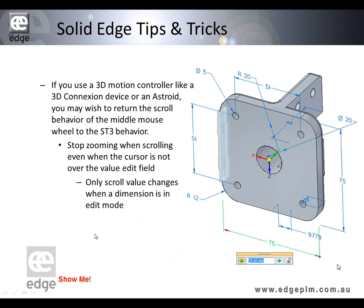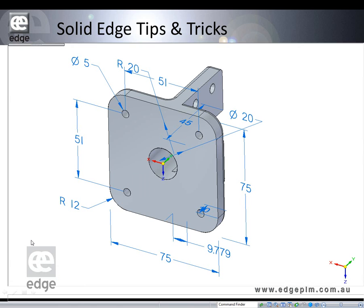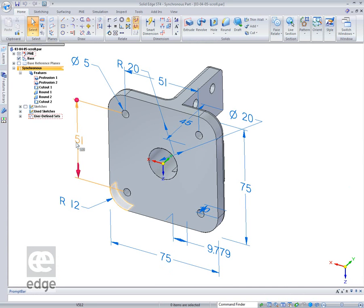Many of you who have been using Solid Edge for some time will be aware that you can use the middle mouse button or scroll wheel to zoom in and out. You can also use it for changing a dimension. With ST4, we made a change to how that operates — you now have to hold the cursor over the dimension value in the dimension edit box to affect the value change; otherwise it will zoom in and out.